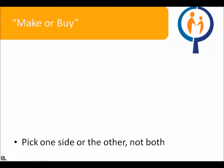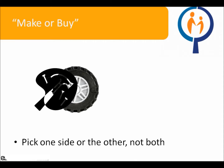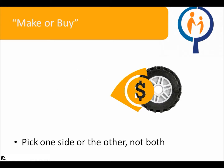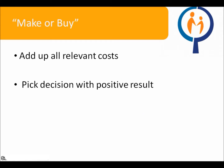Another common decision-making scenario is the make-or-buy situation. Generally, in this scenario, a company either chooses to produce a product input on their own or to buy the product from a different company. This type of question is very similar to the previous scrap-or-keep scenario — pick one side or the other, not both. For example, a toy car company may decide to either manufacture their own plastic wheels or purchase them from an external supplier. Similar to scrap-or-keep, you add up all your relevant costs and pick the decision with a positive result.